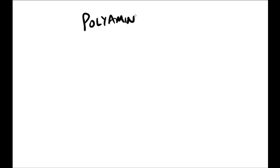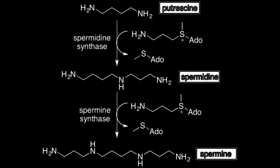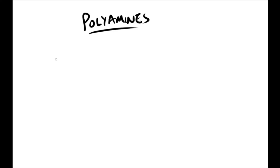A bit about polyamines: they are compounds with more than one amine group. The principal examples are the triamine spermidine and the tetraamine spermine. They are structurally and biosynthetically related to the diamines putrescine and cadaverine. Polyamine metabolism is regulated by the activity of the enzyme ornithine decarboxylase, and polyamines are found in high concentrations in the brain.